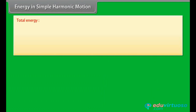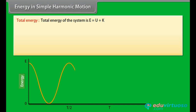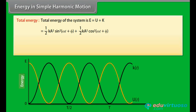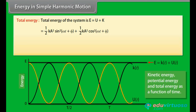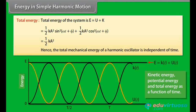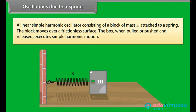Total energy: the total energy of the system is E = U + K = ½KA² sin²(ωt + φ) + ½KA² cos²(ωt + φ) = ½KA². Hence, the total mechanical energy of a harmonic oscillator is independent of time.